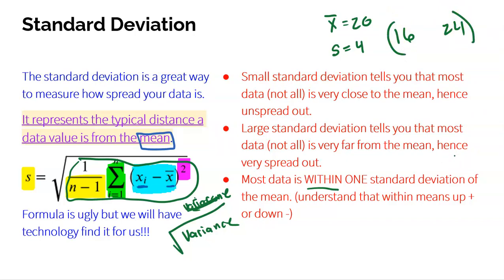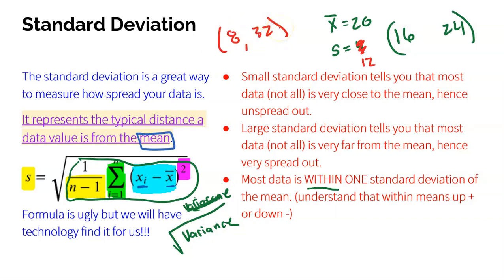That's not very spread out. Whereas if the standard deviation is 12, most of the data will go from 8 to 32 — a much larger spread. Standard deviation is an important number because it tells you the typical distance the majority of your data is from the mean. Could there be data below 8 or above 32? Absolutely. But over 50% of your data will be within one standard deviation.